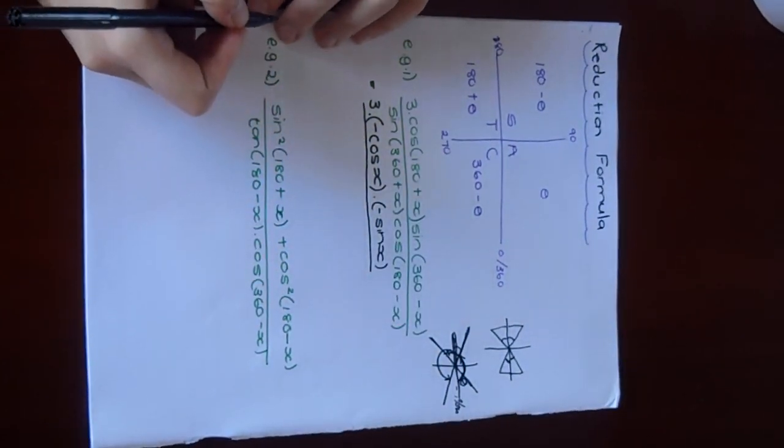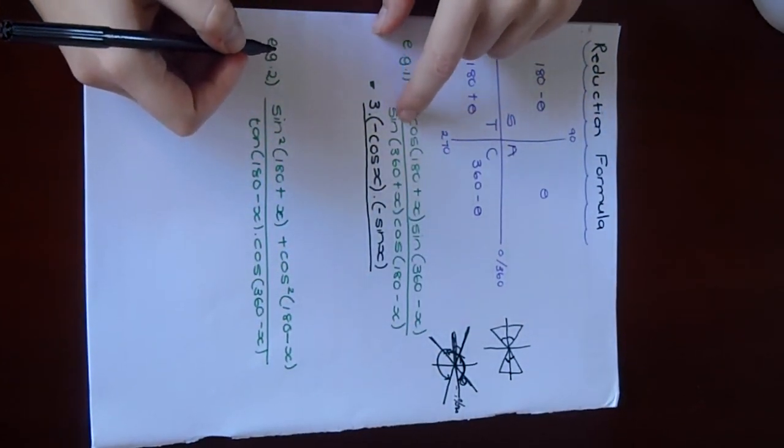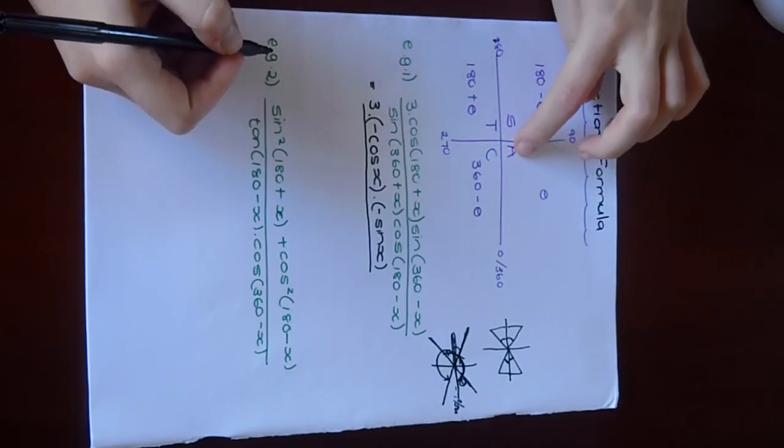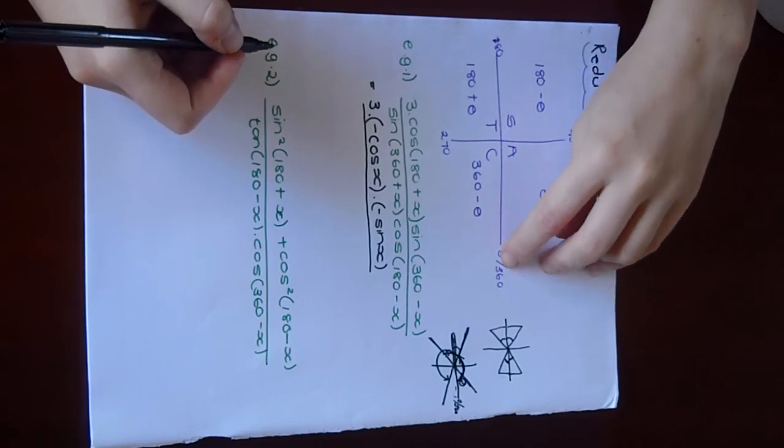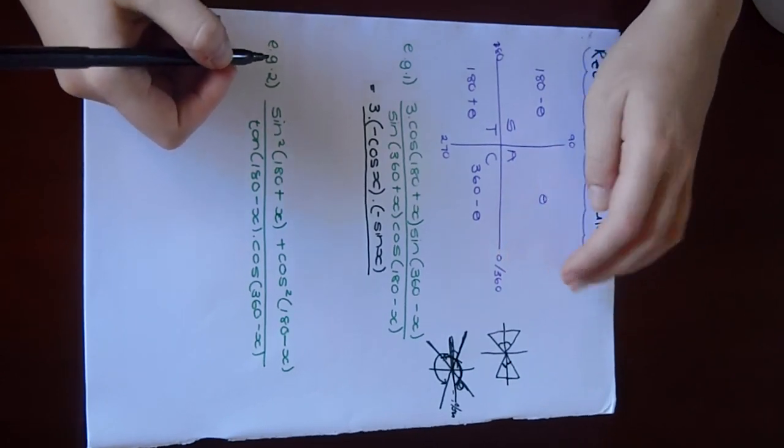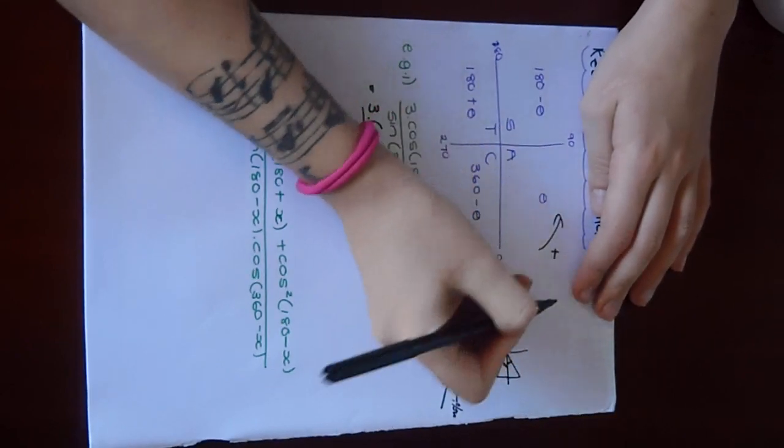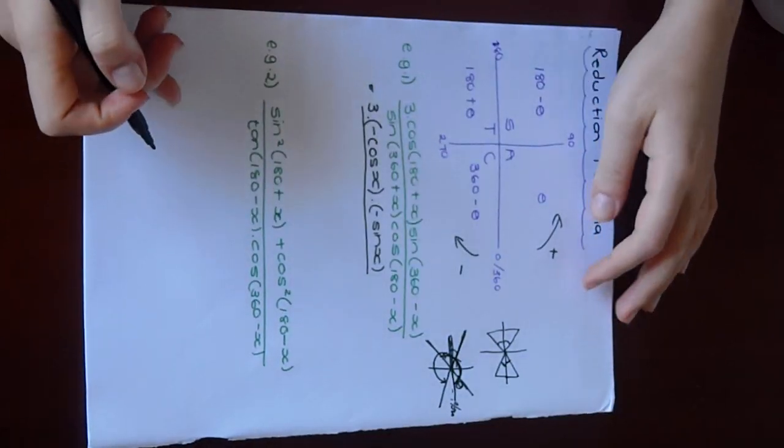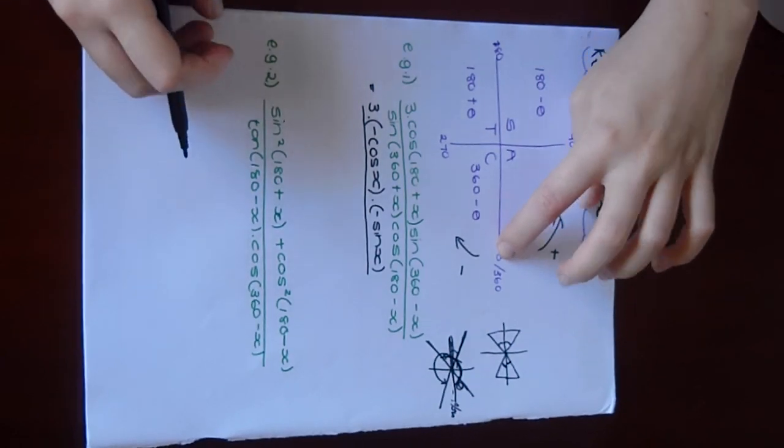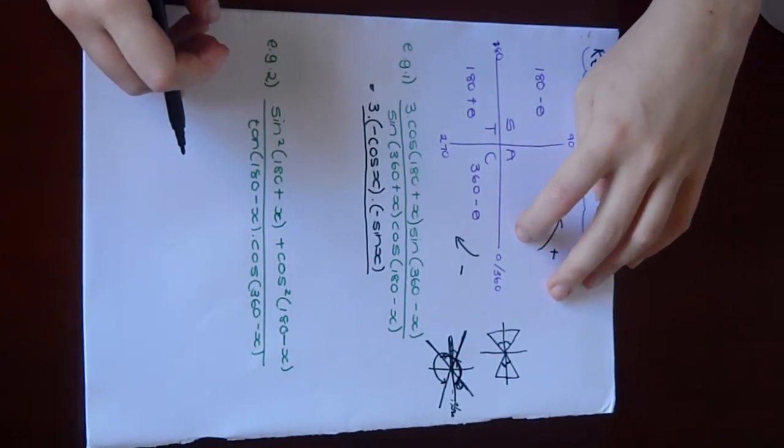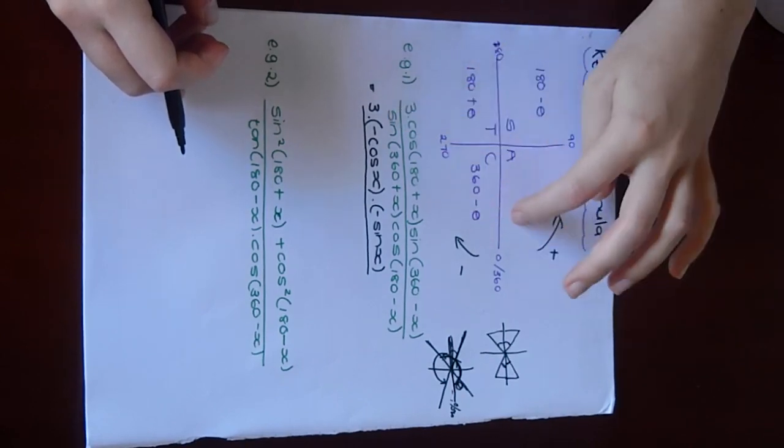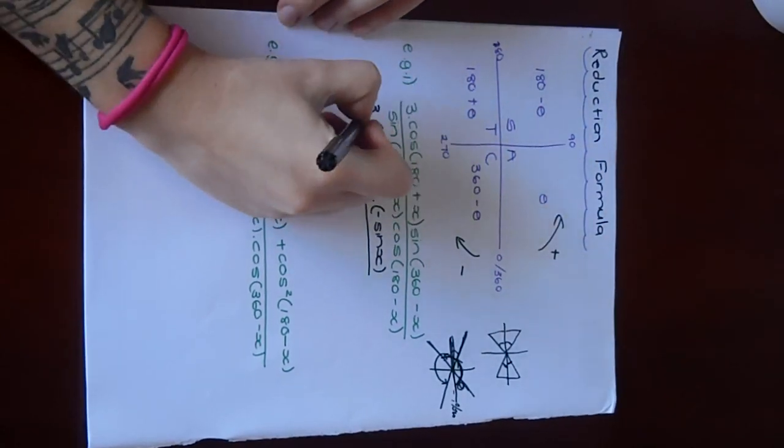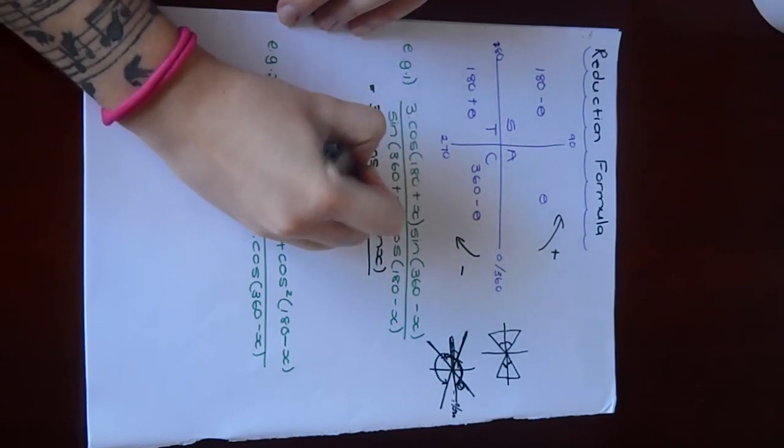All over. Over here, this is sine of 360 plus X. This one's not really on the drawing, but if you think about it, here's 360. This direction is positive, and that direction is negative. So 360 plus X takes me to my first quadrant. What is sine in your first quadrant? Everything is positive in first quadrant, so this would just be sine of X.